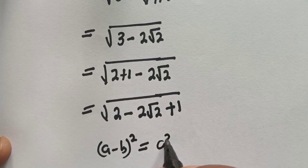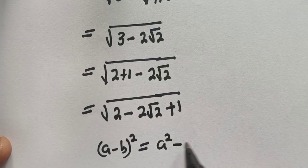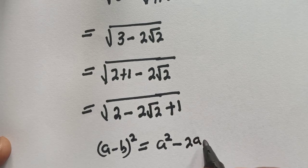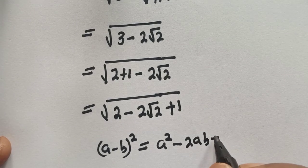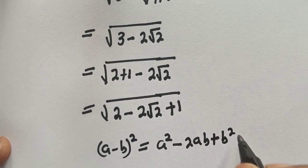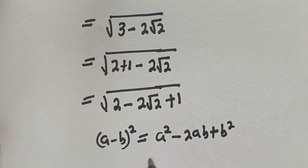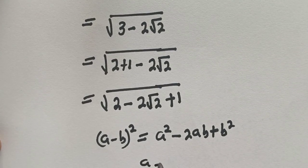Equal to a square minus 2ab plus b square. And in this case it is equal to...